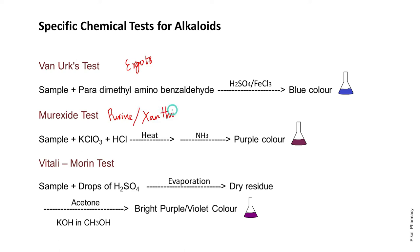Next comes the specific test for purine alkaloids, also called xanthine alkaloids, which is the Murexide test. When the sample reacts with potassium chlorate and hydrochloric acid in the presence of heat and ammonia, there is formation of a purple color. This purple color indicates a positive Murexide test, meaning the sample contains purine alkaloids such as caffeine, theobromine, and theophylline.